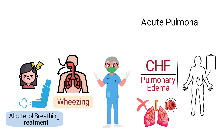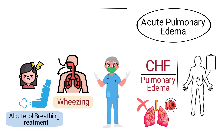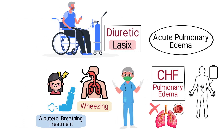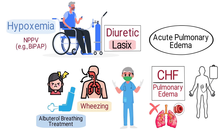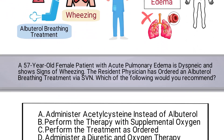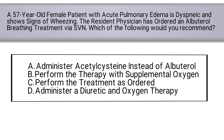Therefore, in general, acute pulmonary edema is best managed with a diuretic such as Lasix. Oxygen therapy is also usually indicated due to the presence of hypoxemia, and non-invasive positive pressure ventilation such as BiPAP is typically indicated for these patients. So by reading the question and understanding what they were really asking, we can determine that the correct answer is D: administer a diuretic and oxygen therapy.